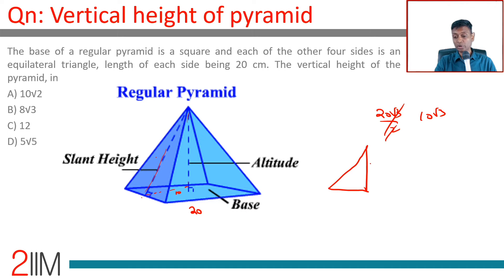Where the altitude h is what we need to find, the hypotenuse is 10 root 3, and the third side is 10. So 10 squared plus h squared is 10 root 3 the whole squared, or h squared is 300 minus 100, which is 200. Or h is 10 root 2.